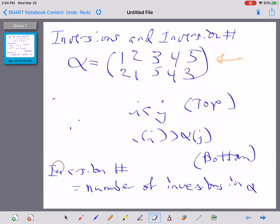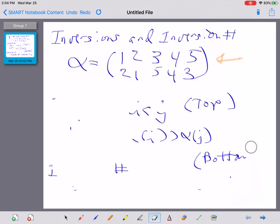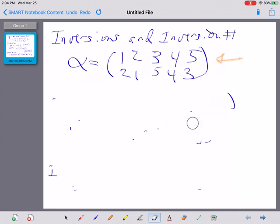So we erase. And once we have everything erased, I want to also make that eraser small again. We're going to start with counting the inversions in this particular permutation.